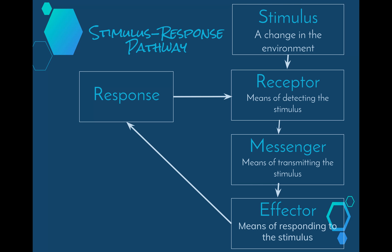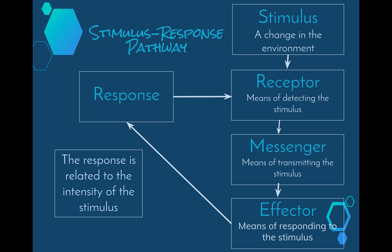That sends a message back to the receptor to say that everything's good to go, and then the stimulus is decreased and therefore the message no longer gets sent. This link or coordination is carried out by the nervous system which is made up of our nerves, our brain and our spinal cord. The response that we see in the stimulus response pathway is related to the intensity of the stimulus — the more intense the stimulus the faster the response will be. So if the hot plate is really hot you're going to move your hand much quicker than if it was only a little bit warm.